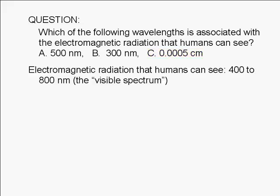For us to be able to see electromagnetic radiation, its wavelength must be between 400 and 800 nanometers. This is known as the visible spectrum.